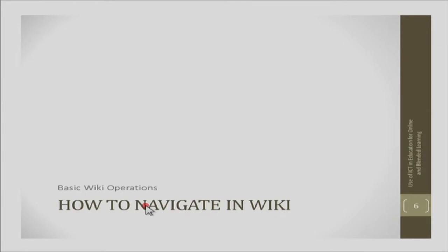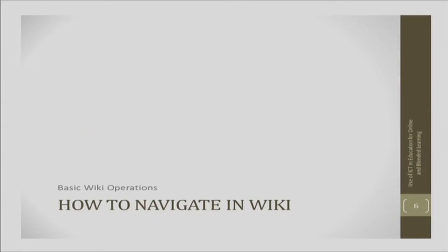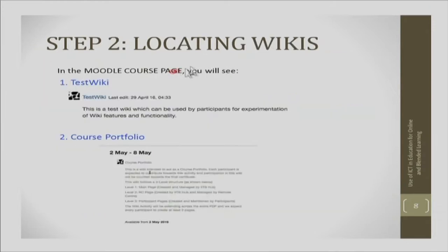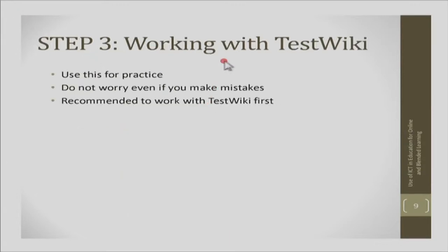For basic wiki operations: to access the wiki, log into Moodle with your username and password. Then locate the wiki — the test wiki is on top and the course portfolio wiki is under week 2 (May 2 to May 8), as the first activity in that week. Descriptions of these wikis are also given alongside them.